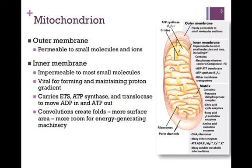Let's look at that individual mitochondrion. First of all, we notice it has an outer membrane, and that gives the organelle its shape. It's highly permeable to small molecules and ions. In other words, we do not need transport proteins to move things across that membrane. More internal to the outer membrane is the inner membrane, and this functions more like our lipid bilayers. It is impermeable to most small molecules because it is a highly nonpolar lipid bilayer.